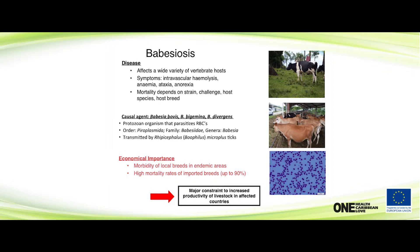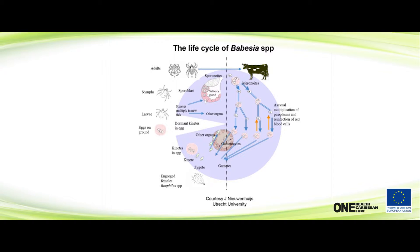We're going to look at the life cycle of Babesia because when you understand the life cycle, you're going to understand the methods that scientists are trying to use to combat it. It has two stages basically: in the mammalian host and in the tick. In the mammalian host, you have the stage called the merozoite, which affects the red blood cells, and there's asexual reproduction of these pyroplasms — they are piriform shaped — and they go and parasitize other red blood cells.